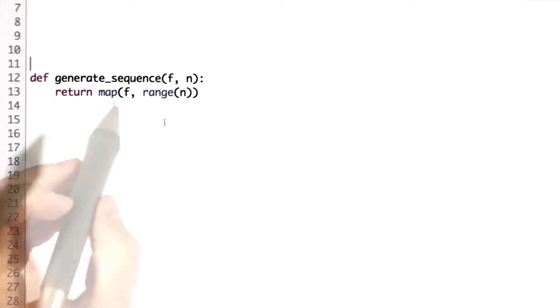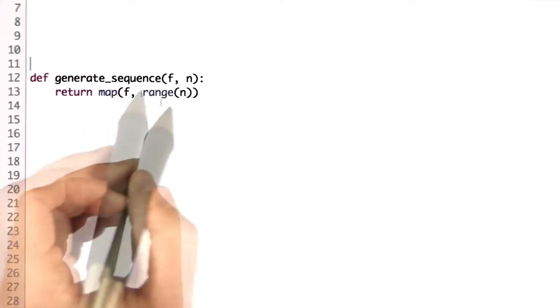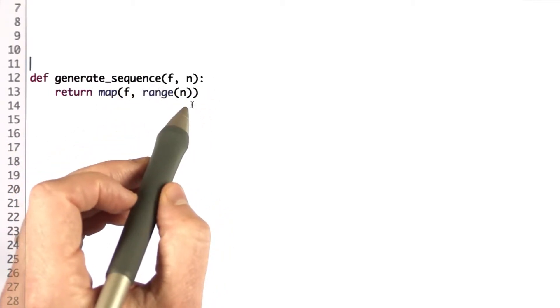And the code for generate sequence is here. It just maps the function onto the range from 0 to n-1.